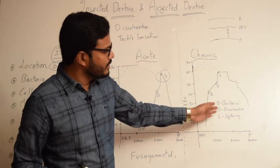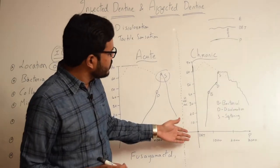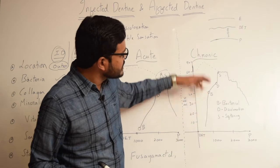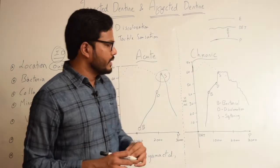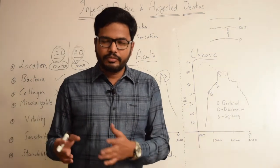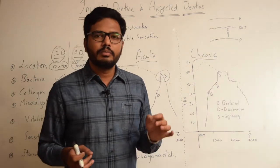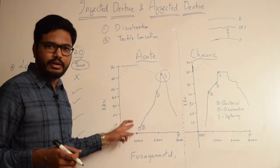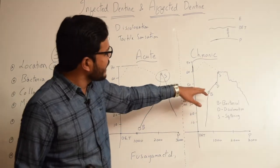Observing the chronic carious lesion: as discussed previously, the distance between the bacterial front and the discoloration front is very small. With respect to hardness values and depth from surface towards the pulp, both acute and chronic caries have more or less the same values. However, the key difference is that the discoloration front is farther from the bacterial front in acute caries, whereas in chronic caries the distance between the discoloration front and bacterial front is very minimal.